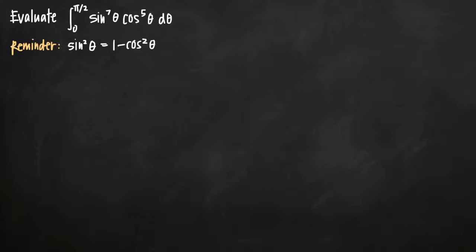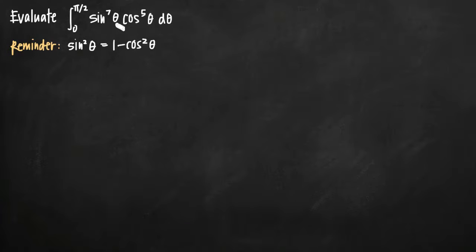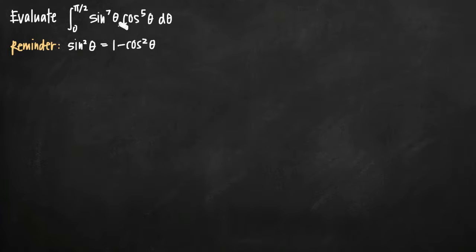Today we're going to be talking about how to evaluate an integral where you have the product of a sine function and a cosine function. In this particular case we have sine to the seventh of theta times cosine to the fifth of theta. The strategy we're going to talk about applies to integrals where the exponent on the sine function and the exponent on the cosine function are both odd. We're going to talk about the strategy you use when both exponents are odd.